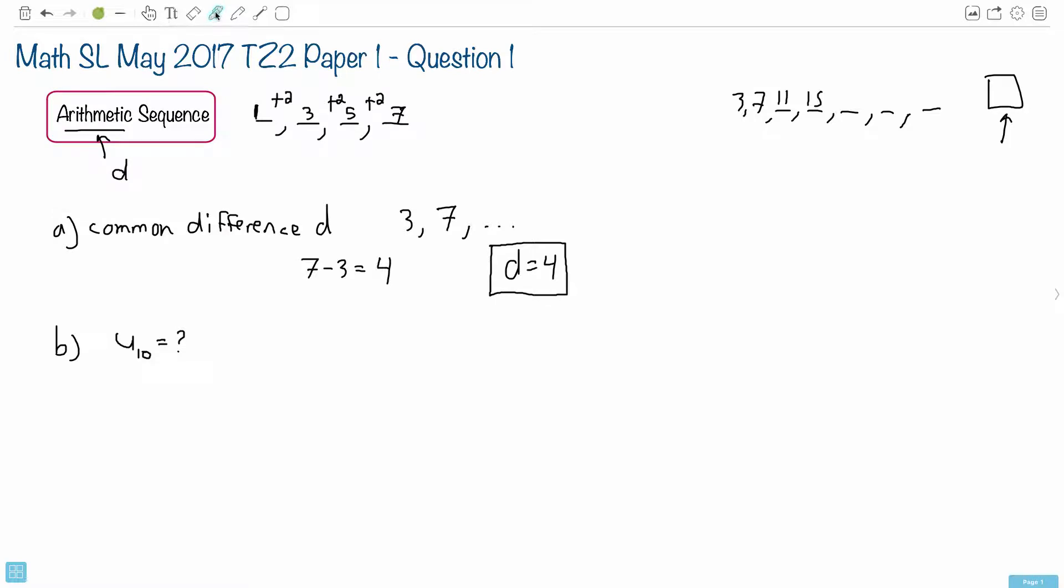If you look in your formula booklet, you should be able to find this equation. It talks about the nth term, which is U with a little subscript n, the nth term of an arithmetic sequence. Remember, this n is something you have to dial in, something you have to actually find.